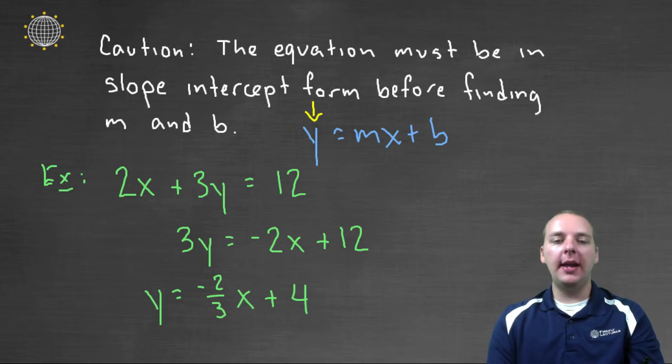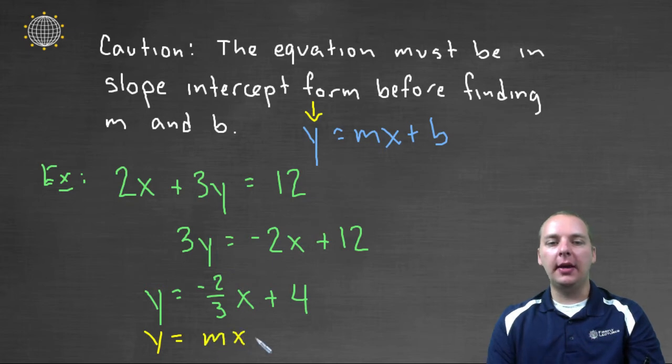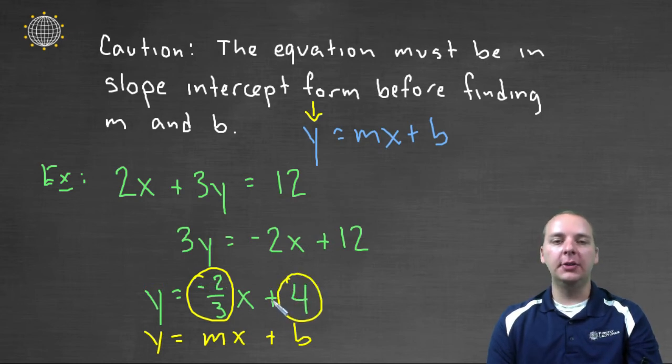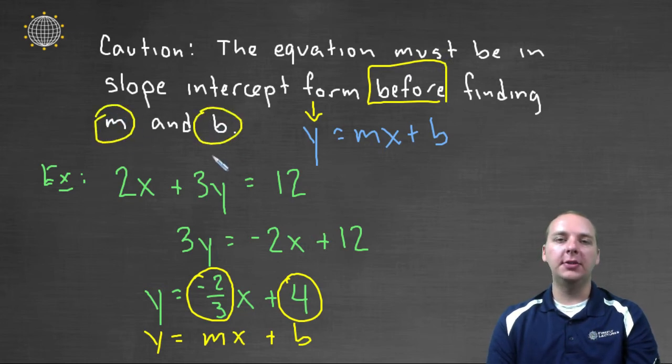Well now, now we're done. Because now we have y equals, very specifically, mx plus b. So the m is negative 2/3, and the b or the y-intercept is 4. So just remember that you have to solve for y, and put it in slope-intercept form before you start talking about the slope and the y-intercept.